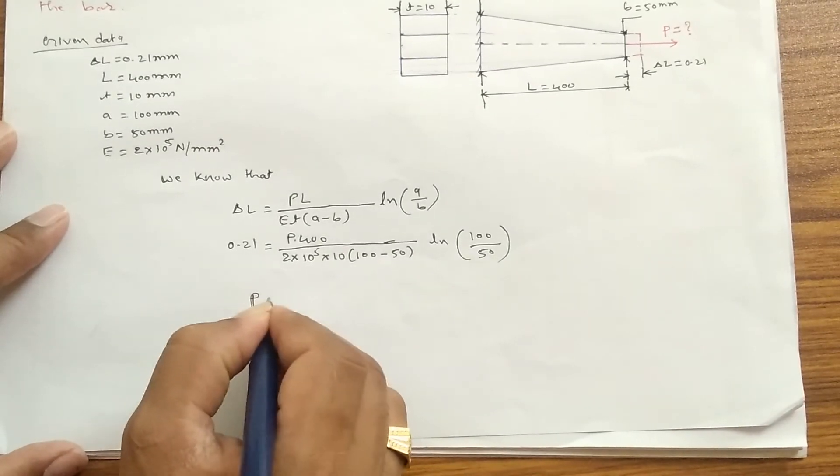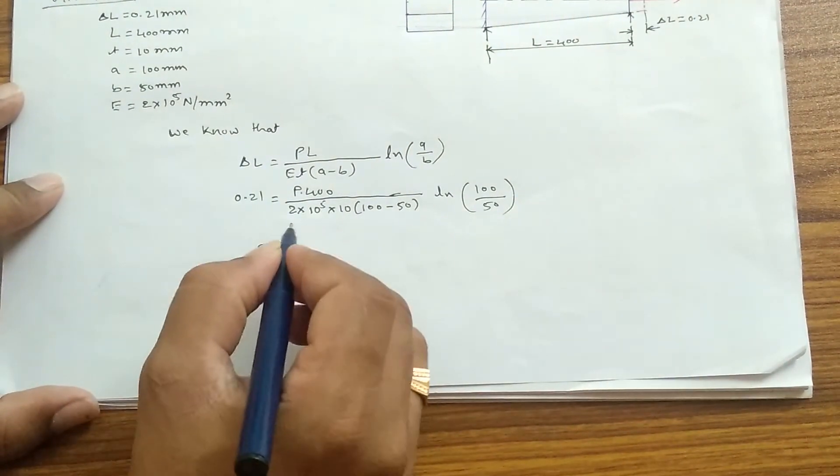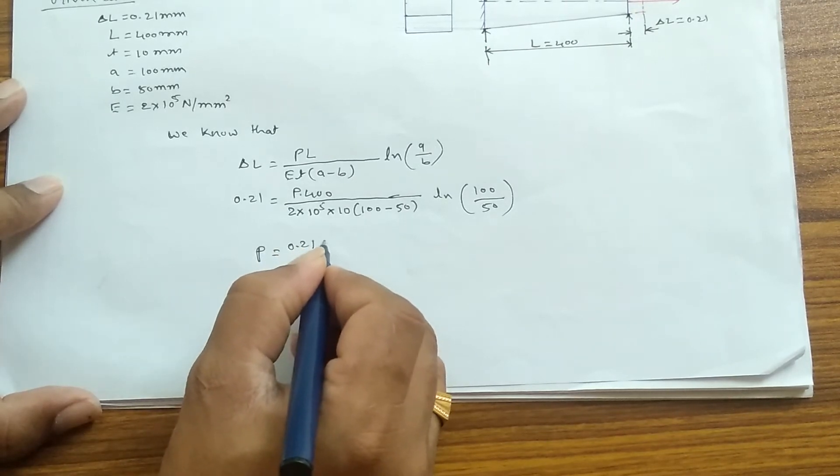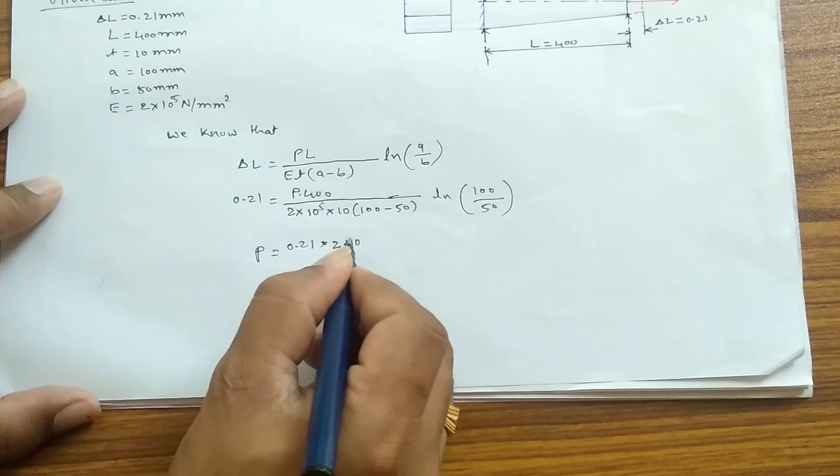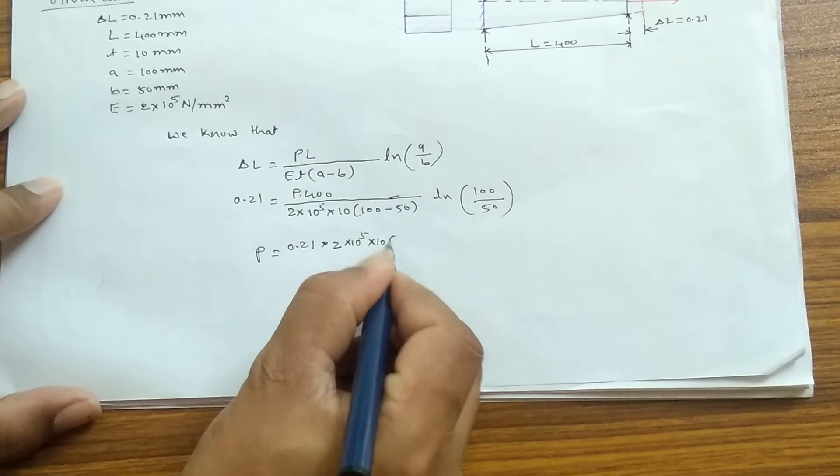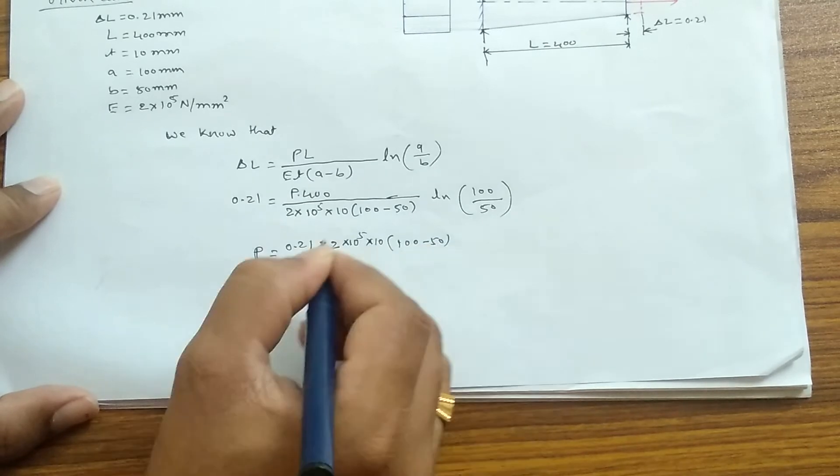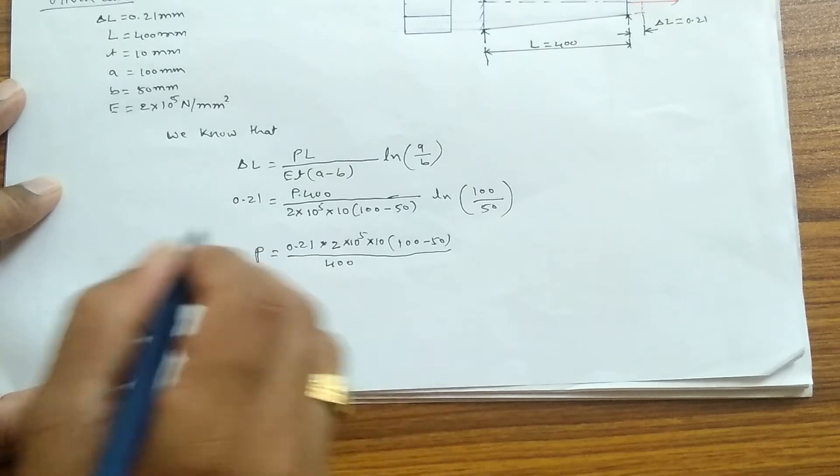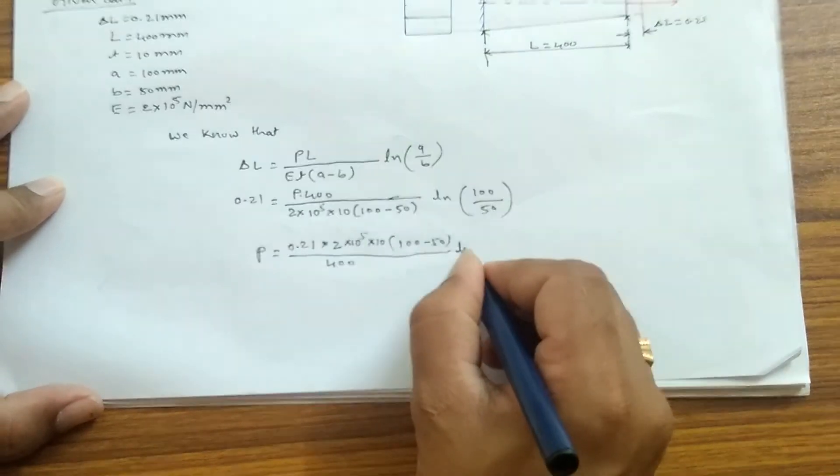I'll just bring P to the left side. So when I bring P to the left side, then 0.21 × 2 × 10^5 × 10, then this 100 - 50 divided by 400...